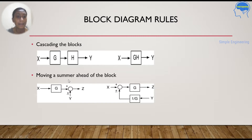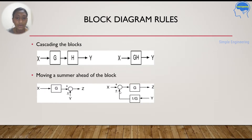Next is moving a summing point ahead of the block. The summing point is placed after the block, and you have to move it before the block. When you move the summing point before the block, you need to add a block that is the inverse of the original block — that is, 1/G will appear in that branch.